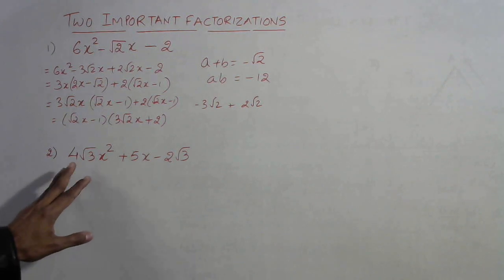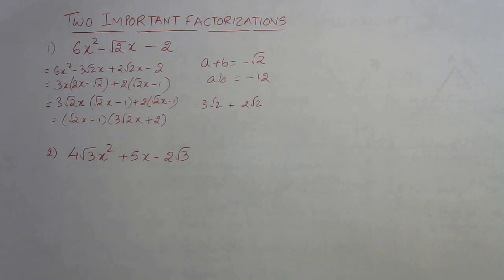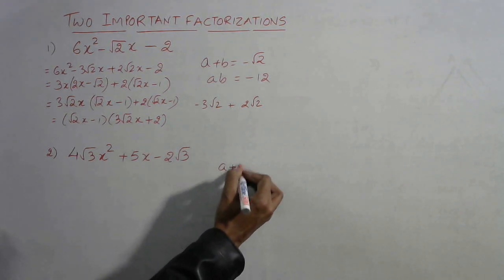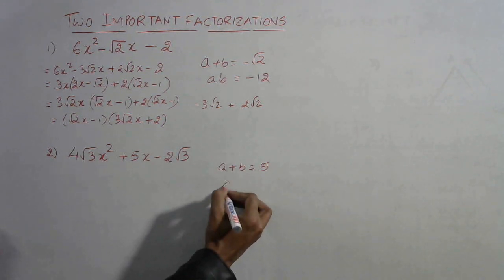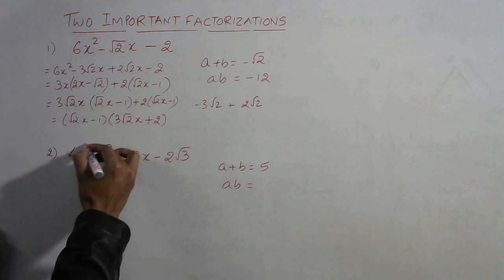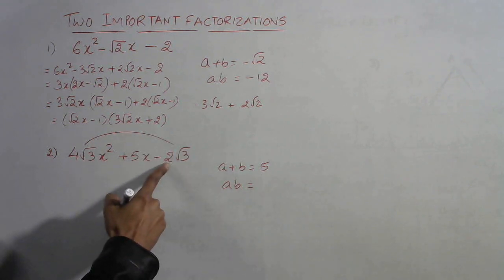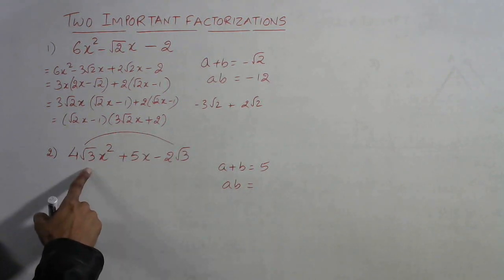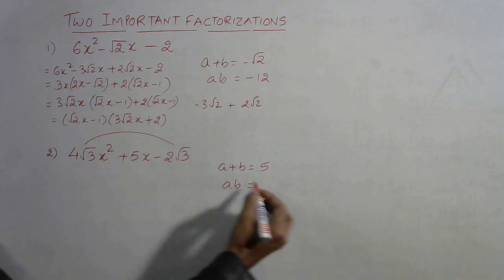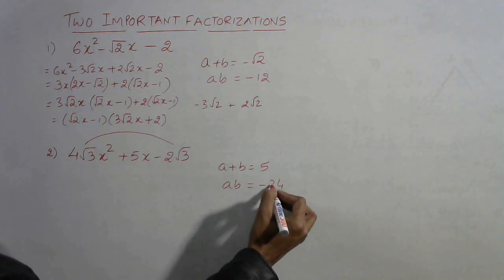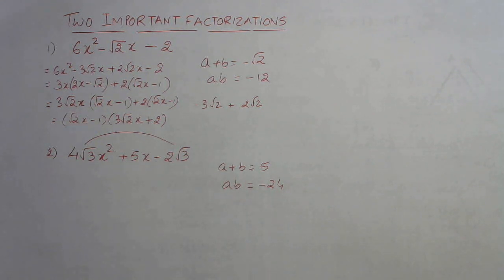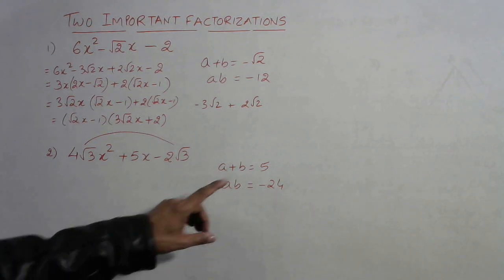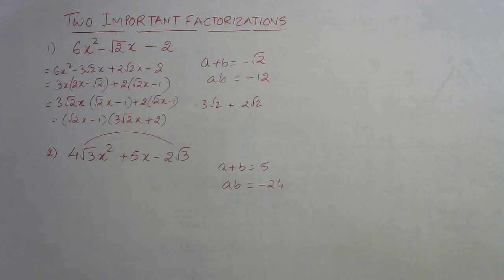Now take a question in which the square root is in the first and third, not in the middle term. Now here you need two terms a and b whose sum is 5 and product is, now see multiply this 4 to the 8 and root 3 into root 3 is 3. So 8 into 3 is 24. So negative of 24. Now first of all let us split the middle term. Now see 8 minus 3 is 5 and 8 into 3 is 24. So middle term split is very easy.